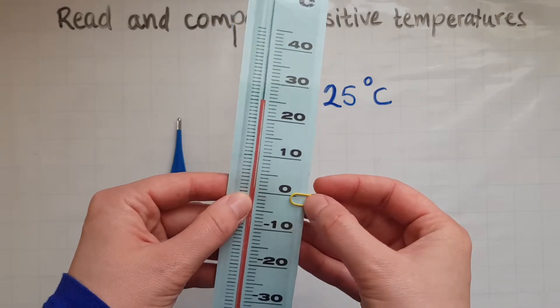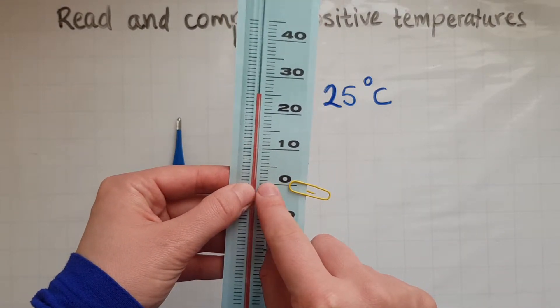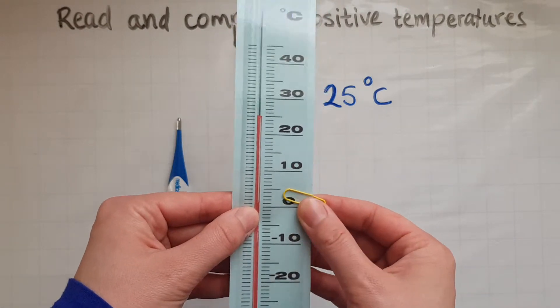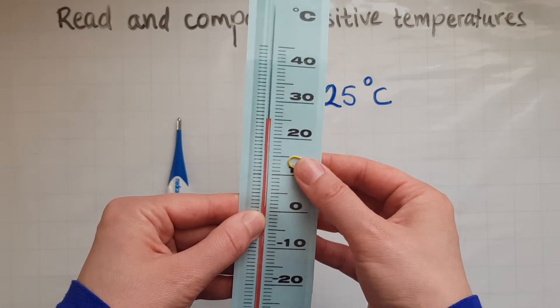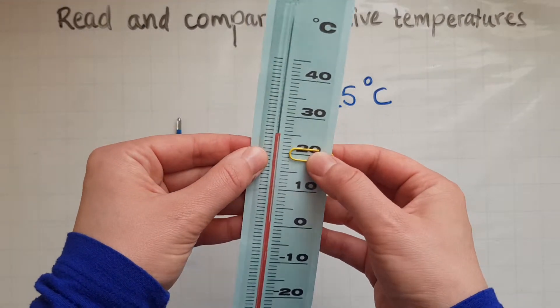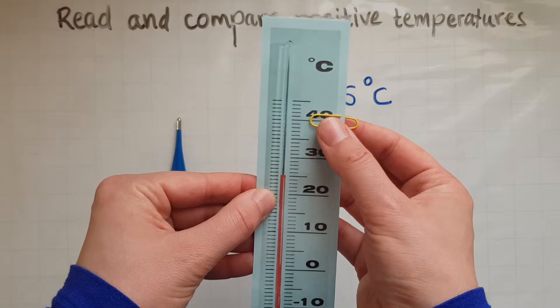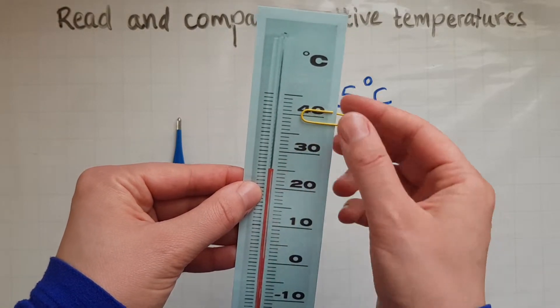And at this point, this is 0 degrees Celsius and this is 10 degrees Celsius, this is 20 degrees Celsius, this is 30 and 40 degrees Celsius. This is very hot temperature.